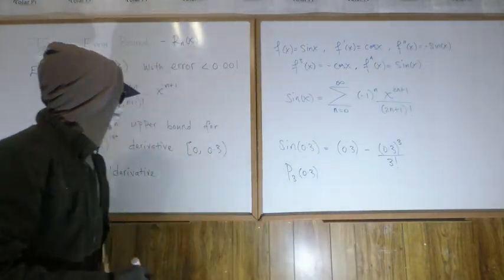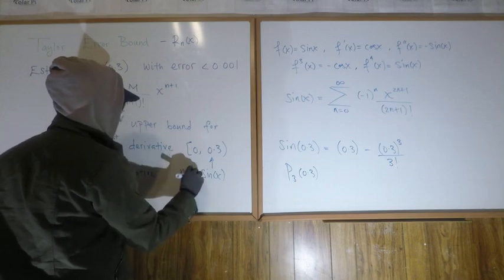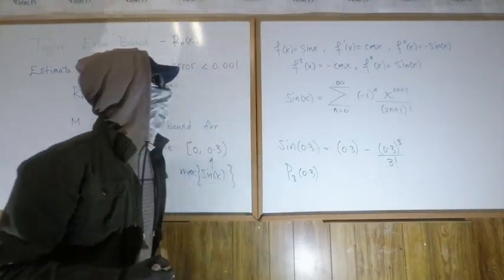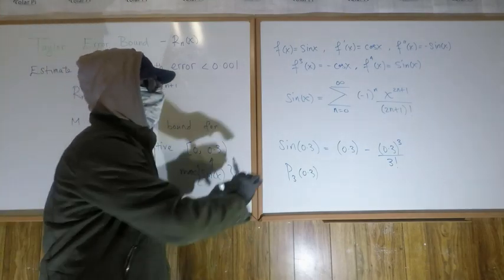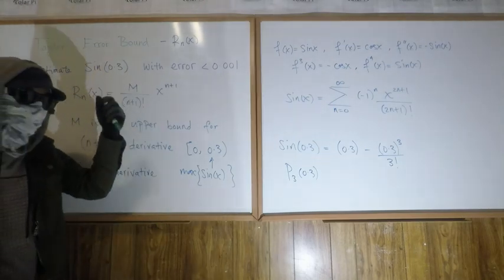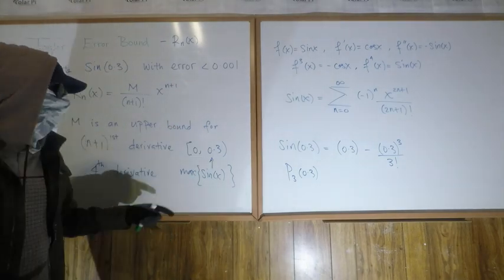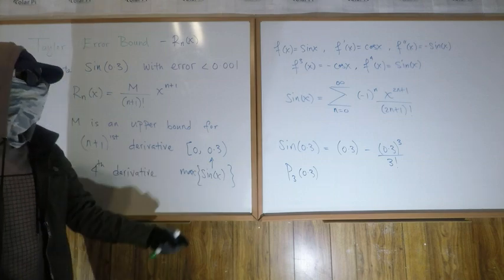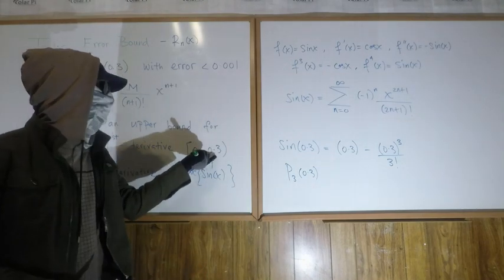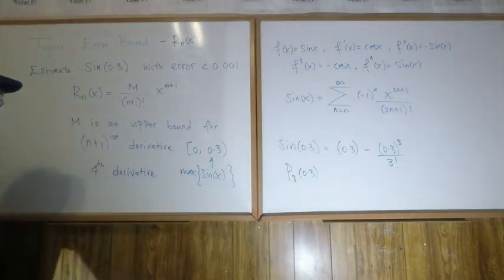So we need the maximum value of sine x on this interval. Notice that if we were using some other term, the derivative might be negative, but M is considered as an absolute value — a maximum of the absolute value inside this interval. Here we're not worried because the fourth derivative is positive, but in a different problem if you're using a derivative that's negative, you want the maximum absolute value it attains on the interval from a to x.